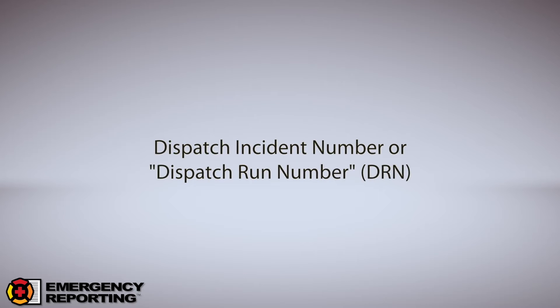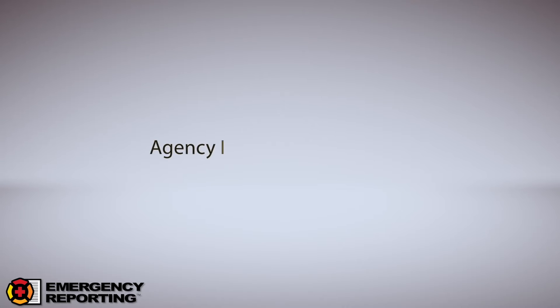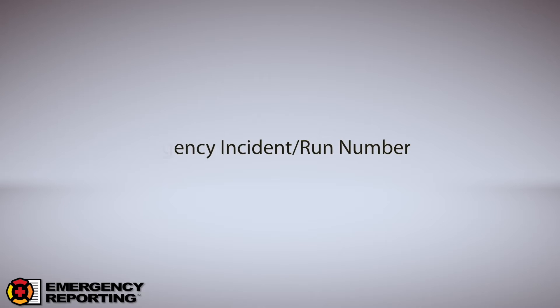XML is basically how the CAD data gets into your ERS system. The dispatch incident number, or dispatch run number, is a unique number generated by dispatch in your CAD call. Sometimes it matches your agency run number, but most of the time the command center has its own running dispatch count that's different from your agency count. Your agency run number is specific to your agency. We do have the ability to capture your agency number from dispatch in the CAD call file, but not all vendors can send this node in the XML file — you'll need to check with dispatch.